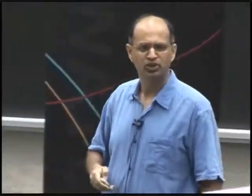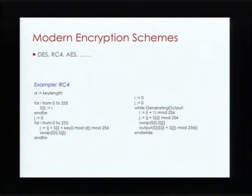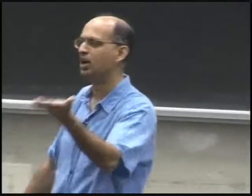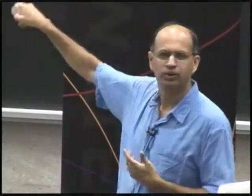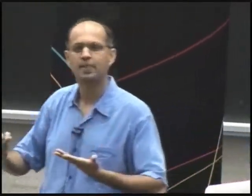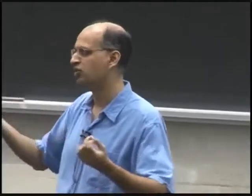If you've heard the names before, what people use on the web and the internet are things like DES, RC4, or AES. I don't want to describe these things to you; I just want to point out that they're rather simple to describe. For example, RC4, which is a modern encryption scheme, can be described by these two small segments of code. So if you actually wanted to program an encryption scheme on your computer, just go to Wikipedia, get this description, and it's really just a few lines of code. It's conceptually very simple to program and explain, and this is what's widely used on the internet today to encrypt large amounts of data.